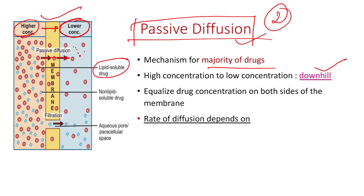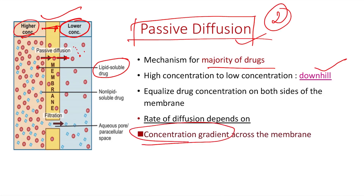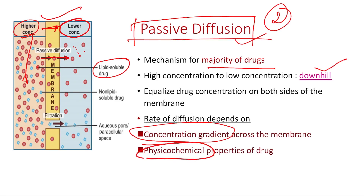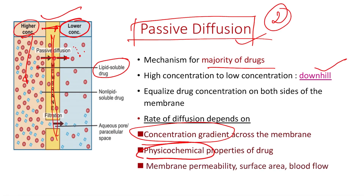The rate of diffusion — that is, movement from higher to lower concentration — depends on basically three things: first, the concentration gradient across the membrane; second, the physicochemical properties of the drug, including its chemical and physical properties; and third, the permeability of that membrane, including how large the surface area is and how rich the blood supply is. All these things matter in the case of passive diffusion.